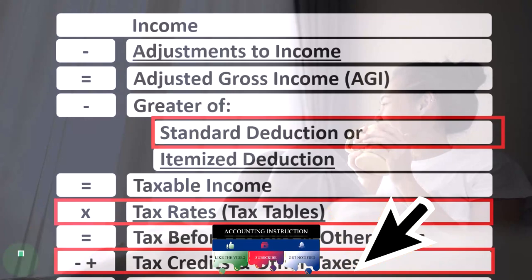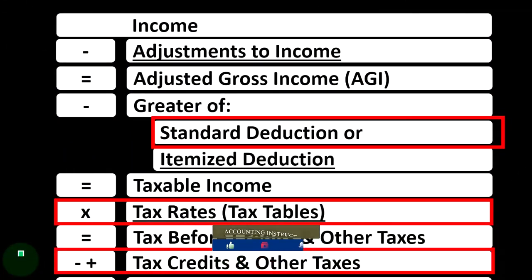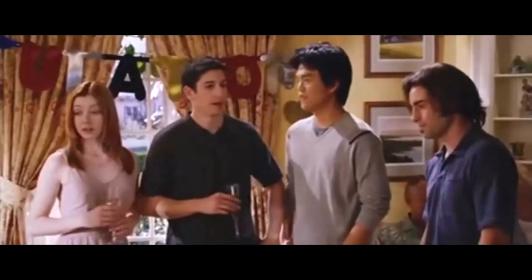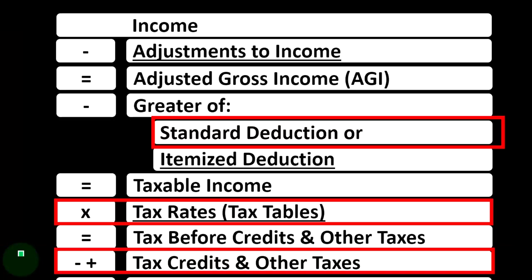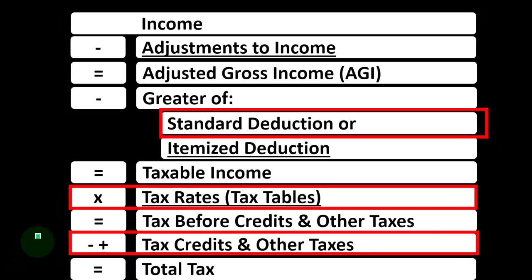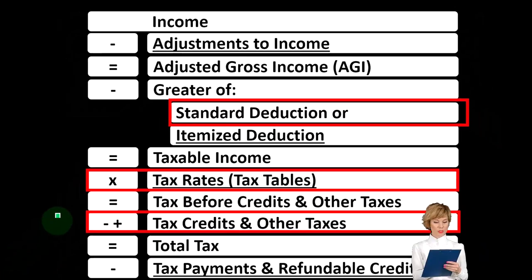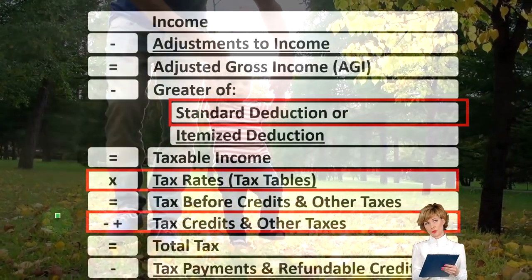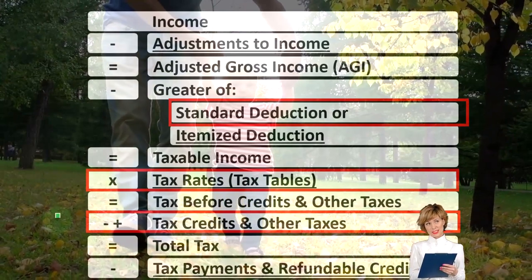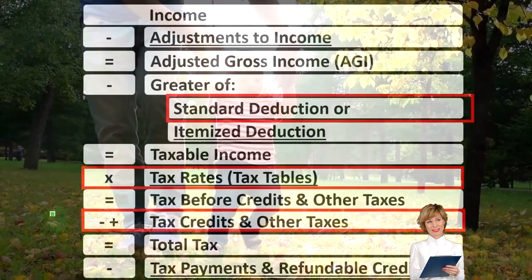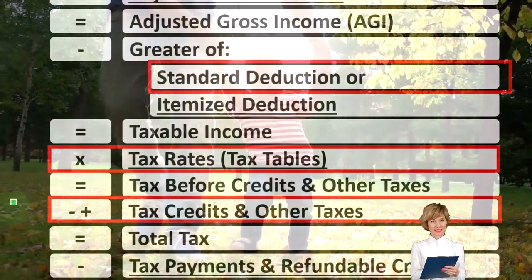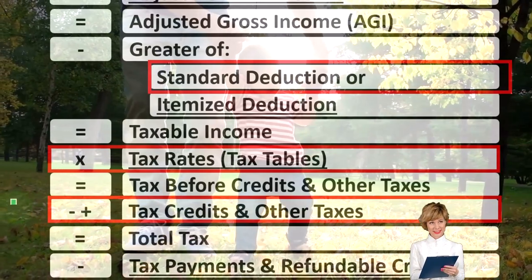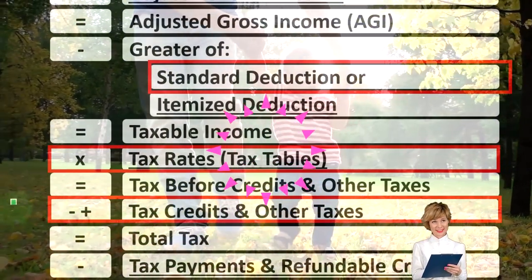We talked about the general rules in a prior presentation. The thought process is: if there is someone as a dependent, we want to think about do they qualify as a qualifying child? Do they qualify for the child tax credit? And if they don't qualify for the child tax credit, then we're looking to get the other dependent credit. That's always the thought process that's in our mind.